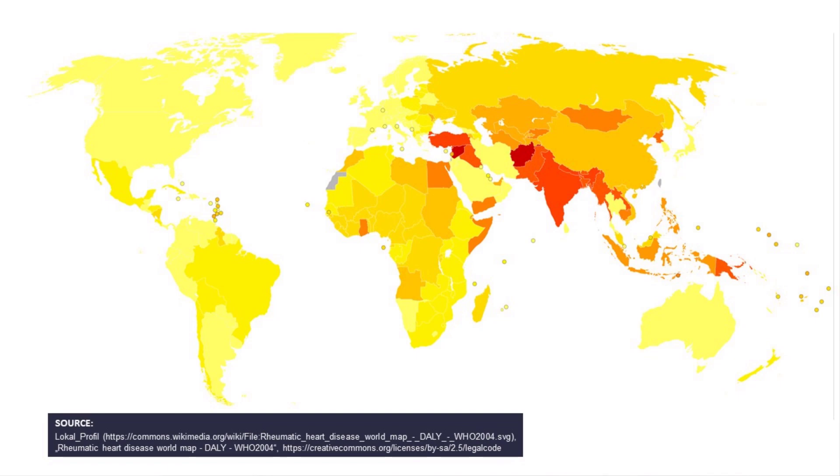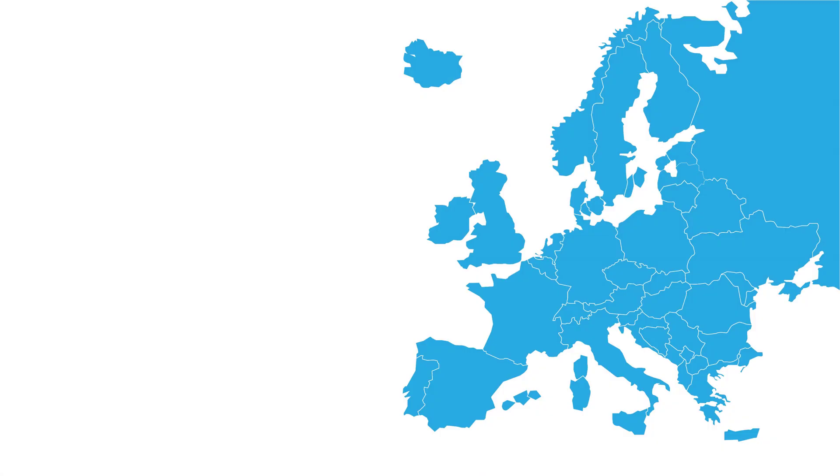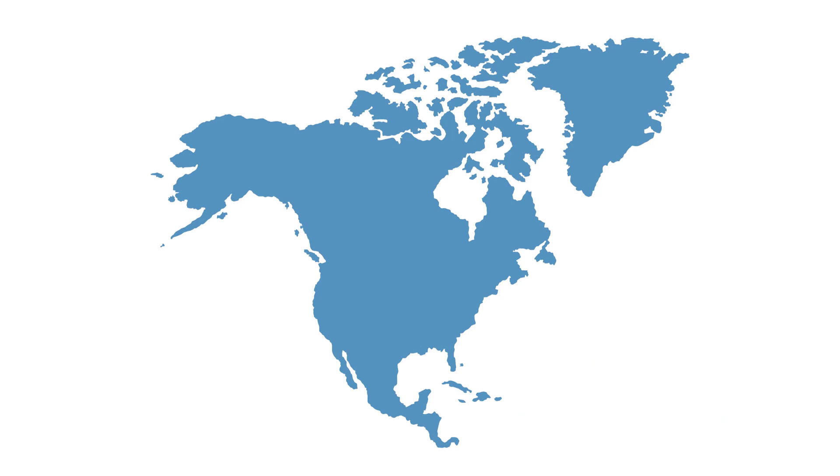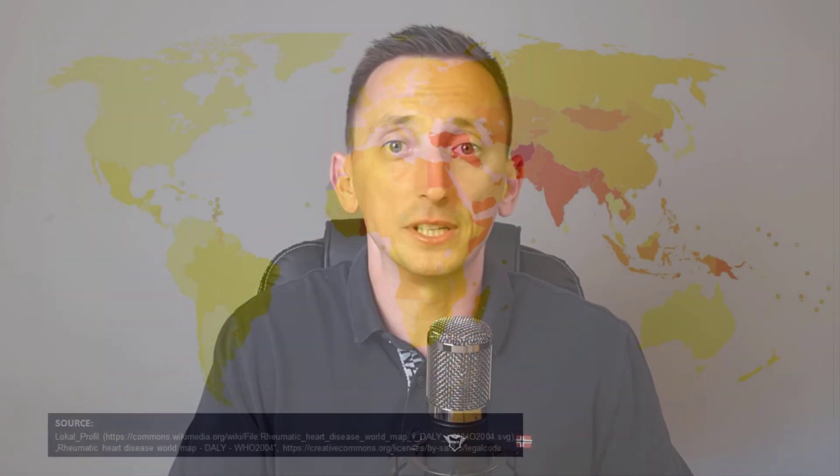Now acute rheumatic fever still is a huge global problem — hundreds of thousands of children get sick every year. But what needs to be pointed out is that there is a huge variation between different parts of the world. In highly industrialized developed countries, acute rheumatic fever is now exceedingly rare. I've worked in a teaching hospital in Croatia for 12 years and I haven't seen a single case. It's the same in most of Europe and North America. On the other hand, in developing countries, the incidence of acute rheumatic fever is up to 100 times greater than in the US, for example.